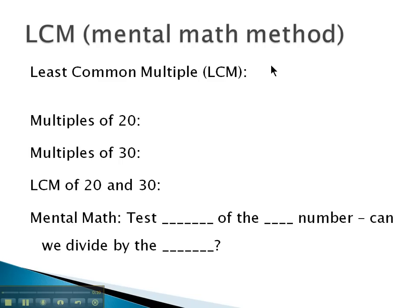The least common multiple, simply put, is the smallest multiple of several numbers. And rather than writing out least common multiple, usually we'll abbreviate it as LCM.